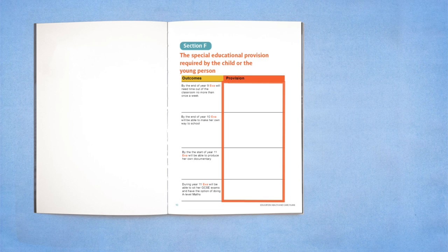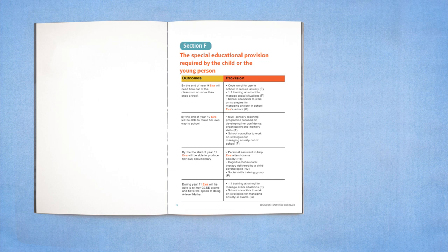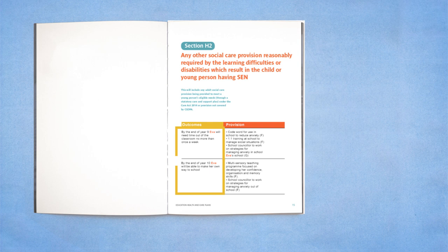The EHCP should ensure that all the strategies, support and services are clearly specified in the provision sections of the EHCP: F, G, H1 and H2, and are sufficient to achieve the outcomes.